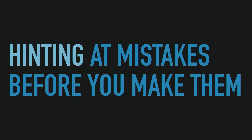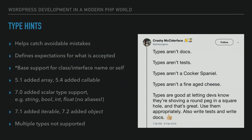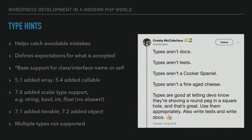Type hinting: hinting at mistakes before you make them. I love this tweet from Phil Sturgeon — types aren't docs, types aren't tests, types aren't a cocker spaniel, types aren't a fine-aged cheese. Types are good at letting devs know they're shoving a round peg in a square hole, and that's great — use them appropriately, but also write tests and write docs. Prior to 5.1, base support was added for class and interface names and self. 5.1 added array types. 5.4 added callables. PHP 7 added scalar type support — string, bool, int, float. 7.1 added iterable. 7.2 added object.